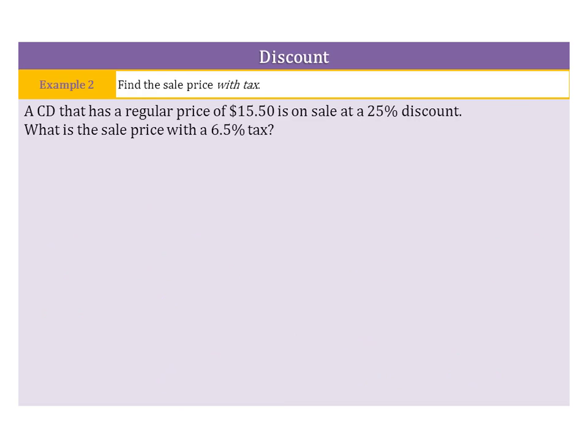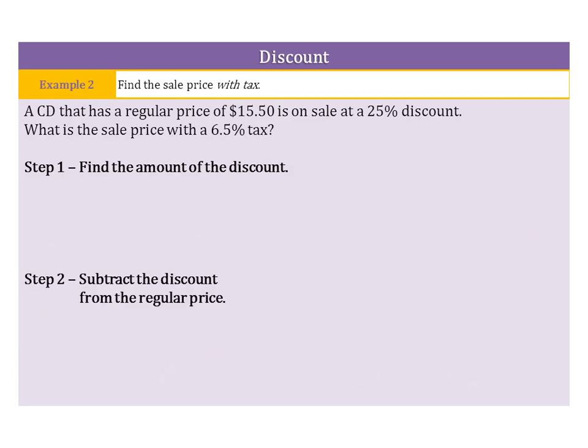As we move on to a slightly more complex problem, we need to find the sale price with tax. We have a couple steps here, but a CD that has a regular price of $15.50 is on sale at a 25% discount. What is the sale price with a 6.5% tax? Well, there are three steps here. Step one, find the amount of the discount. In step two, we'll subtract the discount from the regular price. And lastly, the percent of tax will be applied after the discount is taken.